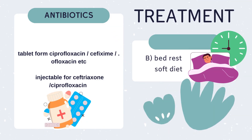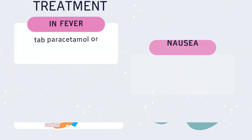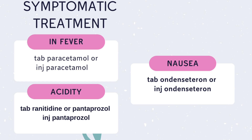The next and best way to treat typhoid is bed rest and a soft diet. Antibiotics such as ciprofloxacin, cefixime, or ofloxacin can be used in treatment of typhoid; their dose depends upon the weight of the patient. Proper treatment should be given depending upon the symptoms of the patient. For fever, paracetamol should be given. For gastric acidity, ranitidine or pantoprazole should be given. For nausea, ondansetron should be given. Their doses depend upon the weight of the patient.